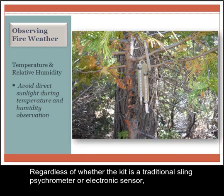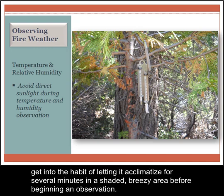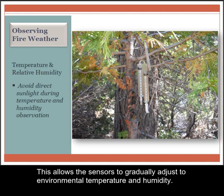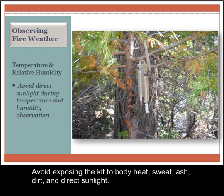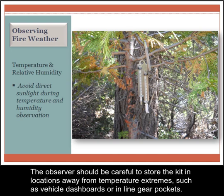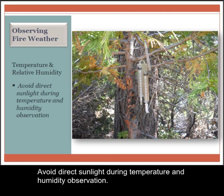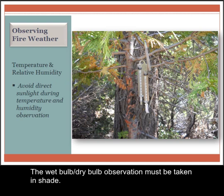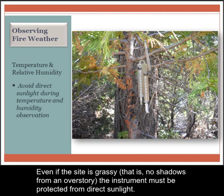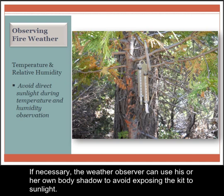Regardless of whether the kit is a traditional sling psychrometer or electronic sensor, get into the habit of letting it acclimatize for several minutes in a shaded, breezy area before beginning an observation. This allows the sensors to gradually adjust to environmental temperature and humidity. Avoid exposing the kit to body heat, sweat, ash, dirt, and direct sunlight. The observer should be careful to store the kit in locations away from temperature extremes, such as vehicle dashboards or in line gear pockets. Avoid direct sunlight during temperature and humidity observation. The wet bulb and dry bulb observation must be taken in shade. Even if the site is grassy with no shadows from an overstory, the instrument must be protected from direct sunlight. If necessary, the weather observer can use his or her own body shadow to avoid exposing the kit to sunlight.